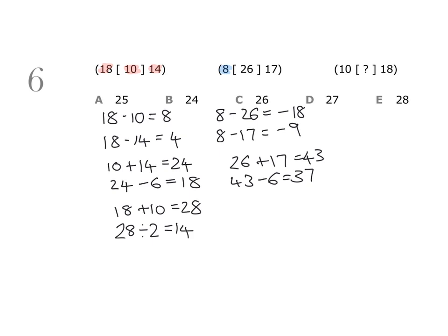Let's see if this works with the middle group. We have 8 and 26, so I take the 8 and add the 26, which gives me 34. Then if I take the 34 and divide it by 2, I get 17, which is the last number. So this does work.